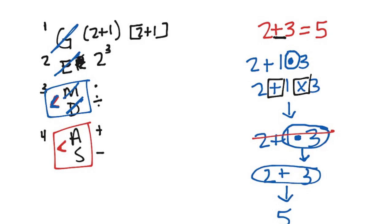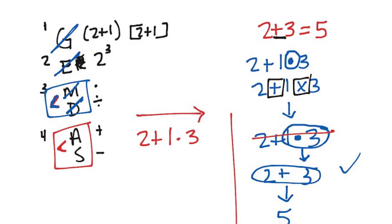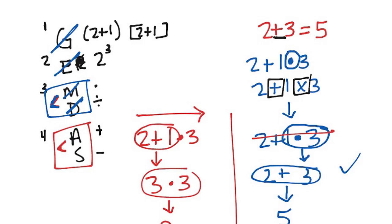I already did multiplication or division. What's my last step — the fourth step? Addition or subtraction. I'm going to do addition. What's 2 plus 3? My answer is 5. That is the correct way of doing it. Now let me show you the wrong way. A kid that doesn't follow order goes from left to right: 2 plus 1 is 3, then 3 times 3 is 9. But you did not follow the order, so that's wrong. If you do it correctly your answer is 5; if you do it wrong your answer is 9.